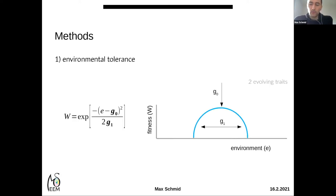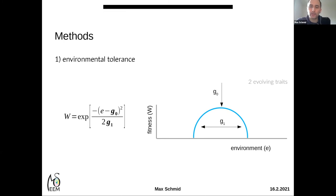Each individual in our simulations was equipped with a genotype coding for two quantitative traits. The first trait was the position of the environmental optimum, so evolution could shift the tolerance curve left or right. The second quantitative trait was the variance of the tolerance curve — the σ² term — such that more narrow or broader tolerance curves could evolve.